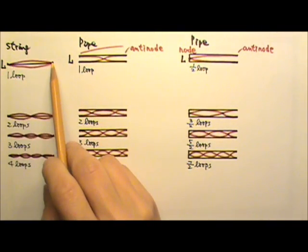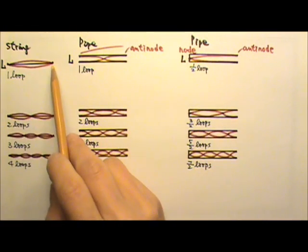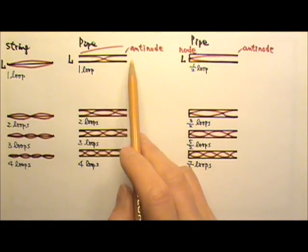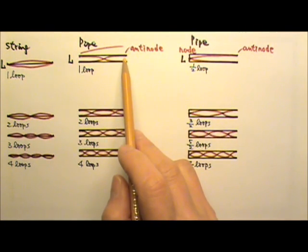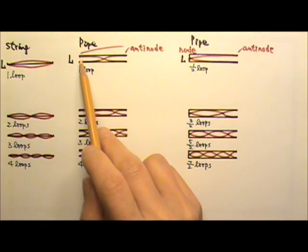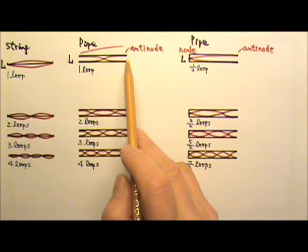For a string, both ends are fixed, so we have node, node on each end. For a pipe, if the ends are open, that means the air molecules can move in and out. That means that we have anti-node on each side.